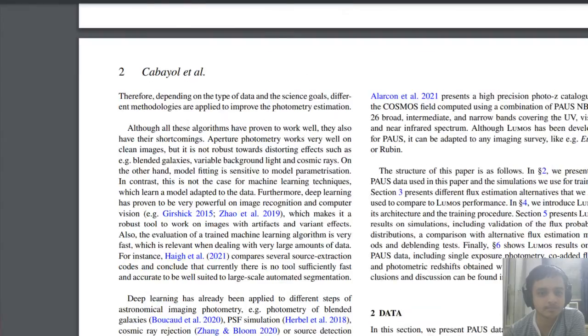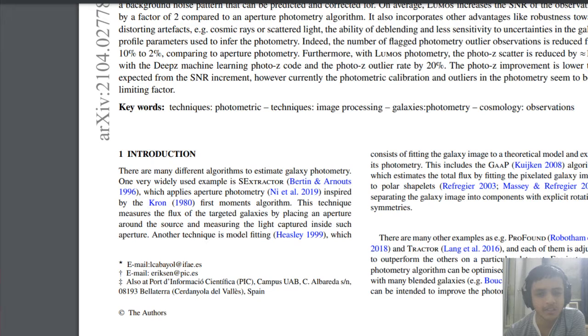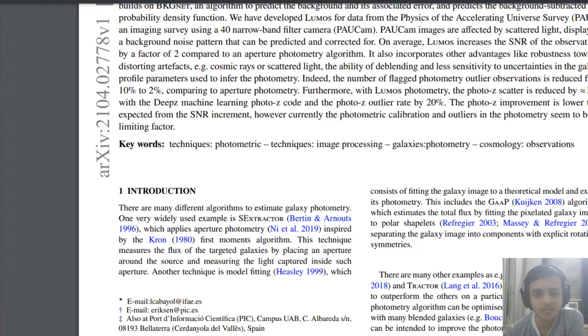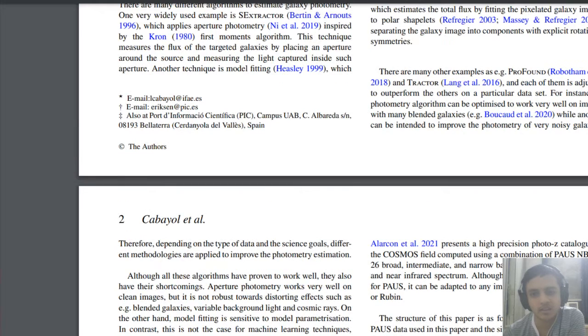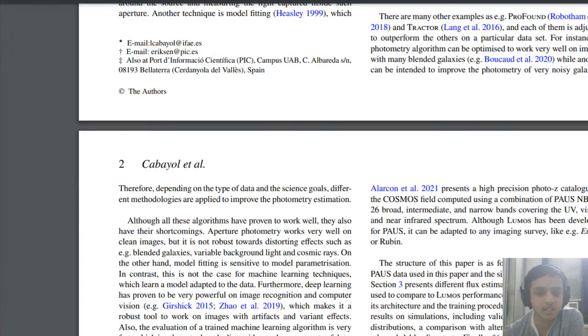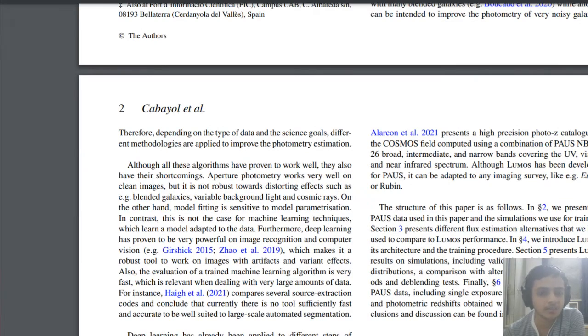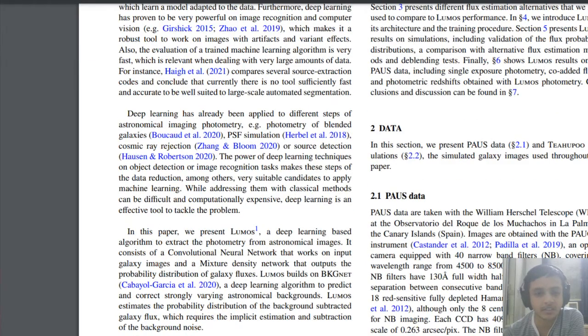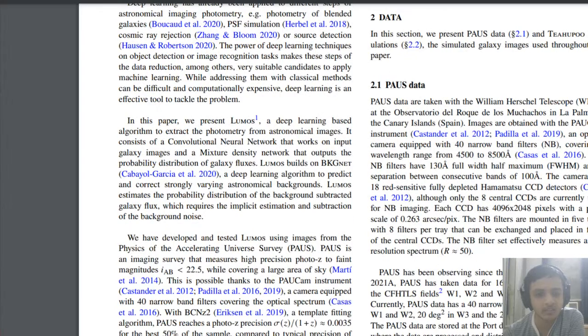The literature talks about various algorithms that had been existing in the past. There was GAAP algorithm 10 years back, S extractor 20 years back. A lot of algorithms and statistical or linear fitting or non-linear fitting models have existed in the past to do galaxy photometry. But nowadays since computational power has increased, people are trying to use methods such as deep learning.